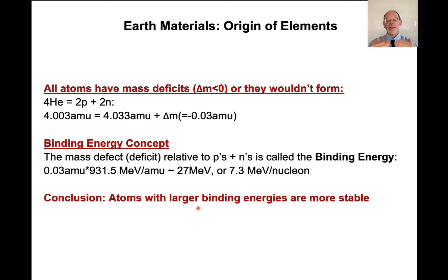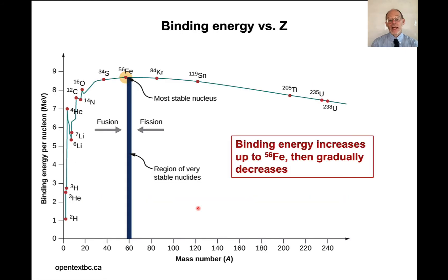There's a bigger step from protons and neutrons down to the isotope. We can plot this. Here is a plot of binding energy per nucleon.